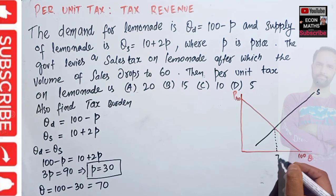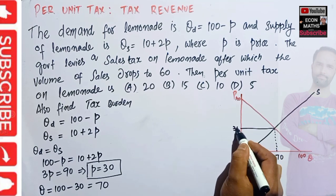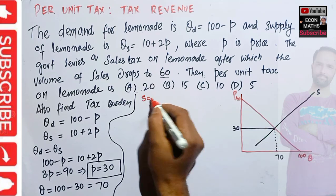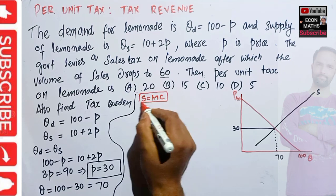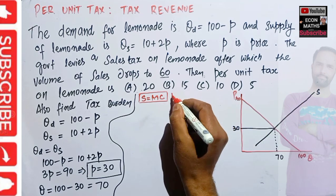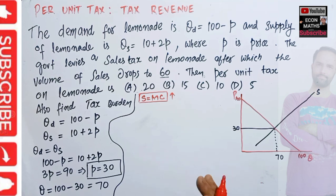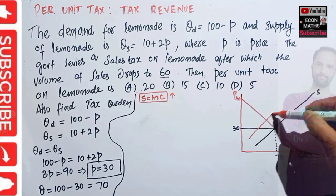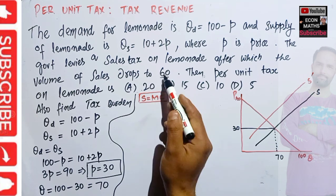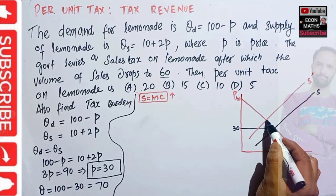So the equilibrium quantity is 70 and the equilibrium price is 30. The question tells us the government imposes a sales tax on lemonade after which the volume of sales drops to 60. When per unit tax is imposed, the supply function — which is the marginal cost function — shifts left, meaning the firm supplies less. Let S-dash be the new supply function after the tax.